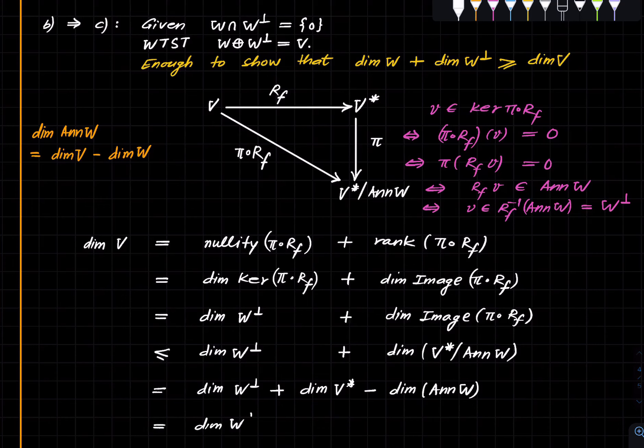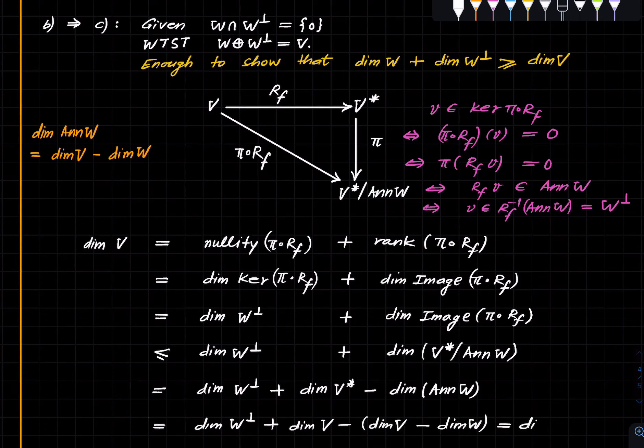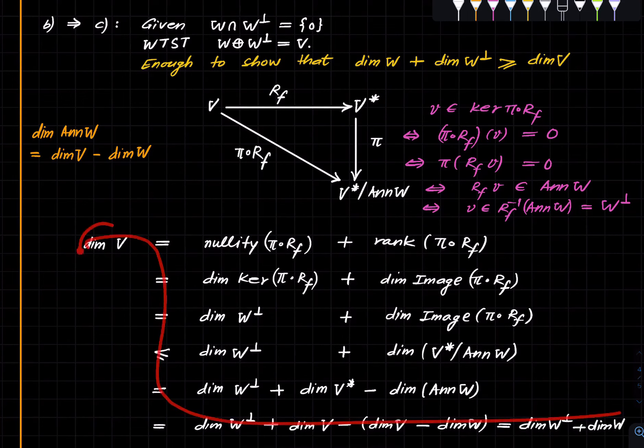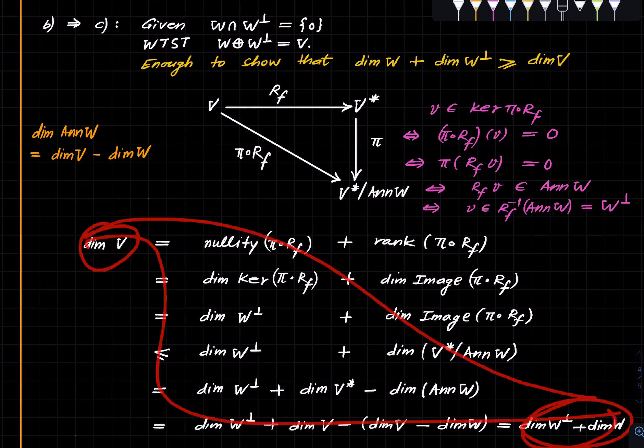Hence this is equal to dimension W plus dimension V star, which is same as dimension V, minus dimension V minus dimension W. This equals dimension W perp plus dimension W. So all this gives us that dimension V is at most that, which is what we wanted to show, and hence it finishes the proof of B implies C.